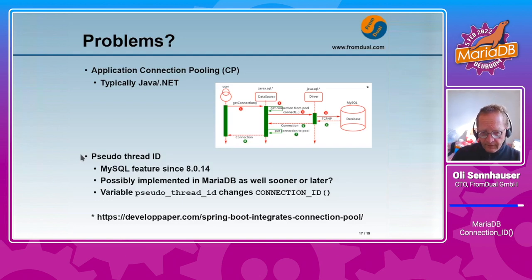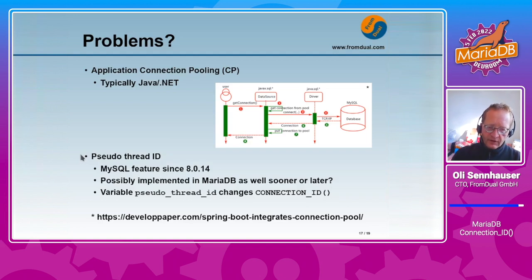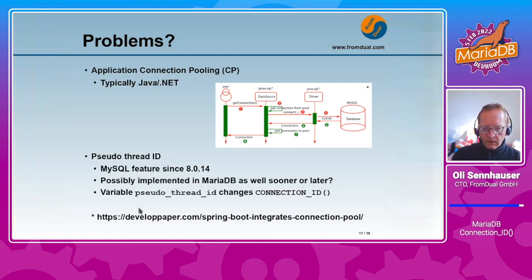This variable pseudo_thread_id can be changed and it will influence the connection ID. So if you mess around with this variable, the numbers of your connection ID are probably not correct or not what you expect anymore. I have also added a link here if you want to read more about connection pooling.